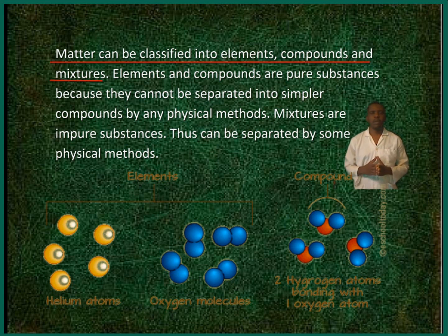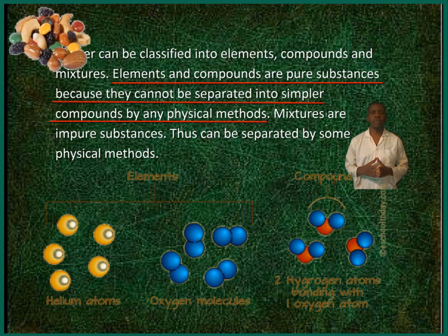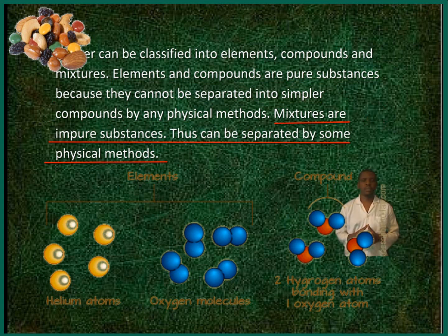Matter can be classified into elements, compounds and mixtures. Elements and compounds are pure substances because they cannot be separated into simpler compounds by any physical methods. Mixtures are impure substances; they can be separated by some physical methods.